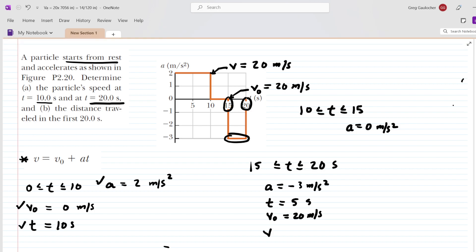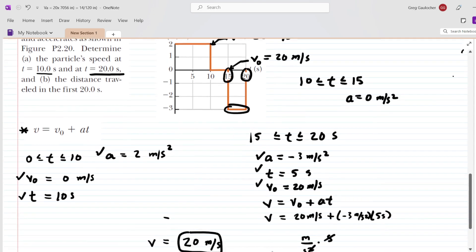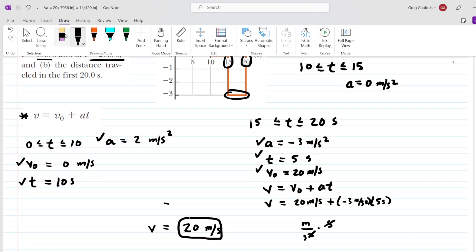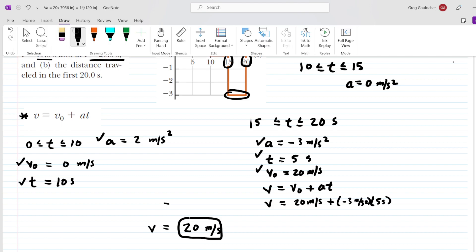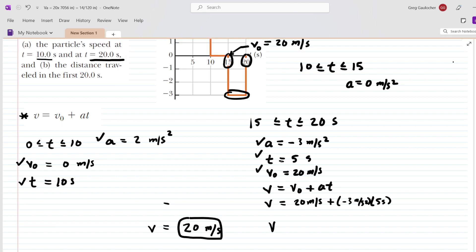To do that, we're going to use the same equation: v equals v₀ plus at. We're going to plug in these three values right here. When we simplify the right-hand side of that part of the equation, we're going to have 20 minus 15, so we get 5 meters per second. This is the correct answer for the velocity at 20 seconds. And we had computed the velocity at 10 seconds.